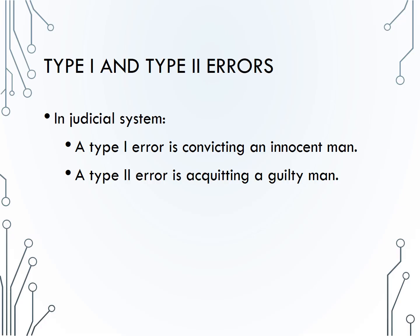Another common way to think about errors is in our judicial system. Remember, innocent until proven guilty. So our null hypothesis in our jury system is that the defendant is innocent, and the alternative hypothesis is that the defendant is guilty. A type 1 error, then, is to convict an innocent man, and a type 2 is to acquit someone who is guilty.